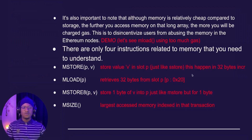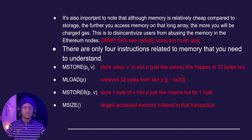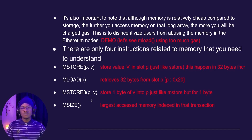There are only four memory-related instructions we need to understand: mstore, which takes a value and stores it in a slot (like sstore); mload, which retrieves 32 bytes from a slot; mstore8, which stores one byte of a value into a slot; and msize, which returns the largest accessed memory address.